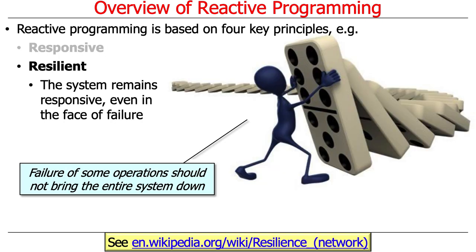The second principle is resilience, meaning the system will remain responsive even if something fails. If somebody runs over your computer with a steamroller it may not be resilient, but people running Amazon Cloud try very hard to avoid complete failure. In our context, resilience means that if one operation fails, you don't want that domino effect of taking everything down — the whole system doesn't fail when a piece of it fails. We want to tolerate partial failure.